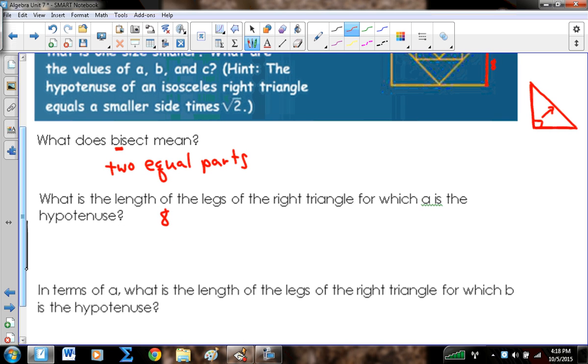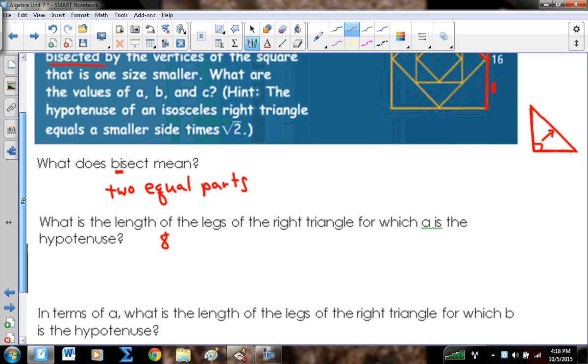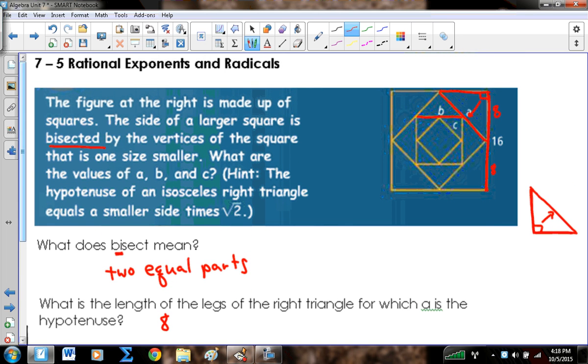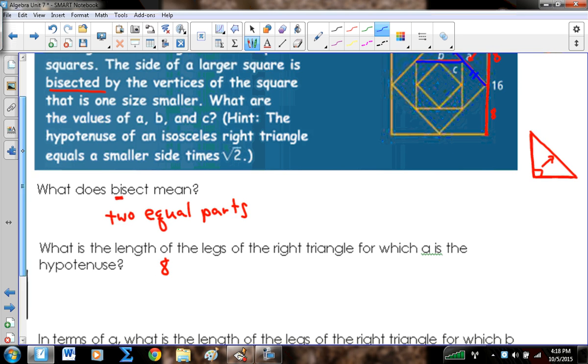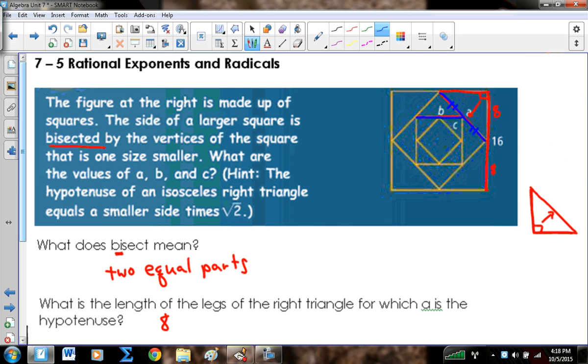Okay, and then the next question says, in terms of a, what's the length of the legs of the right triangle for which b is the hypotenuse? Okay, again, b is going to cut this side a into two equal parts, so it would be one half of a. And then we need to remember things about this isosceles right triangle is the side times radical 2. So for a, this would be 8 radical 2. For b, this would be a over 2 times radical 2. And then c would be b over 2 times radical 2. We're going to get into that a little bit more, so I'm going to skip over that a little bit.